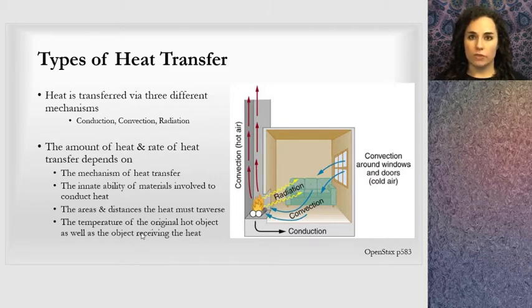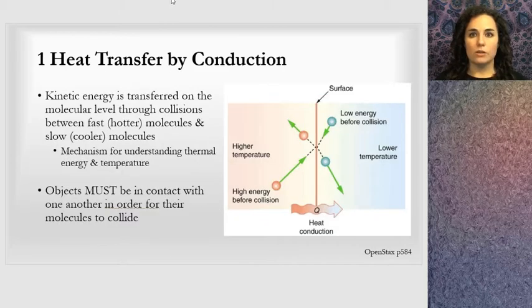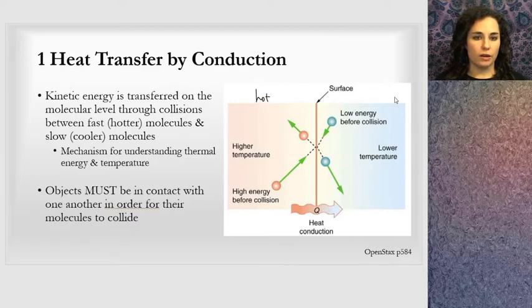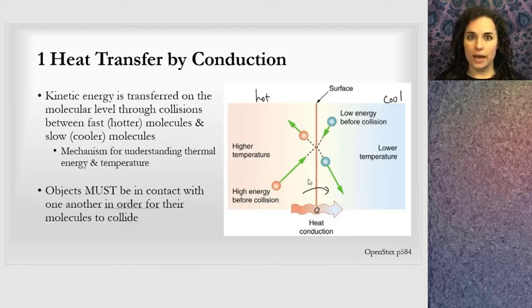The first heat transfer method is by conduction, where we see that kinetic energy is transferred on a molecular level through collisions of the hot object and the cold object. We have two substances here, a hot object and a cold object. We see there's a higher temperature, higher energy in the molecules in the hot object. They collide with the lower energy molecules in the second object, and there's a transfer of energy, heat conduction. That is the definition of conduction, when the molecules collide and kinetic energy is transferred.